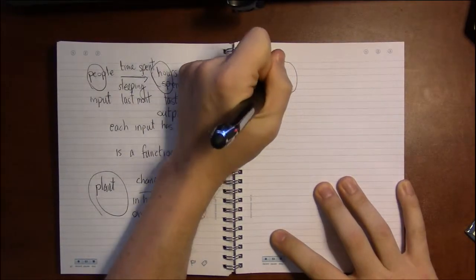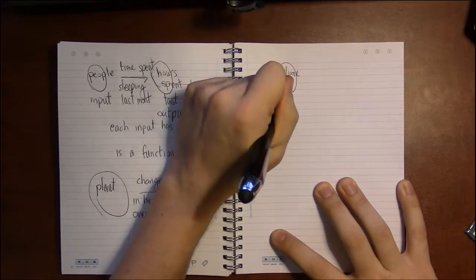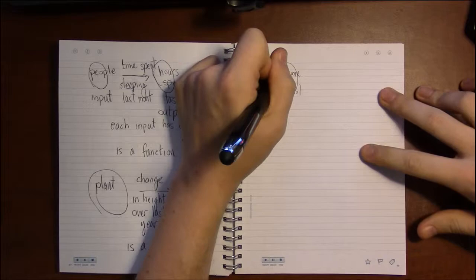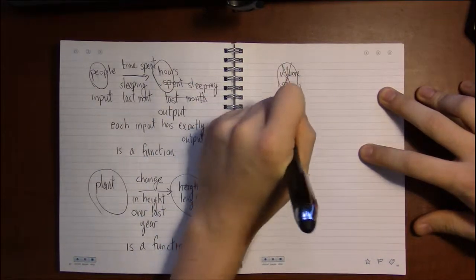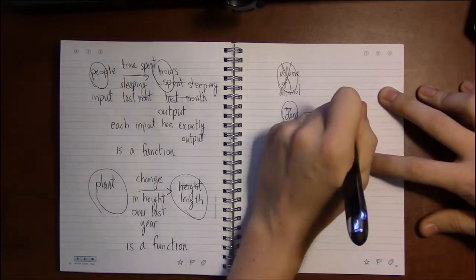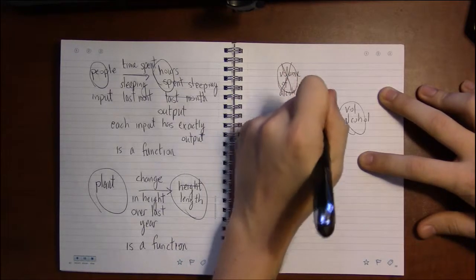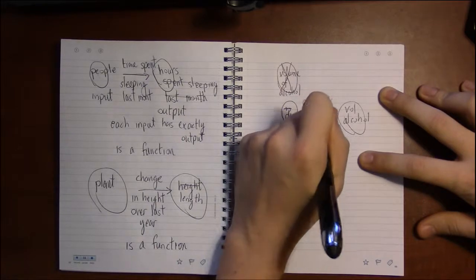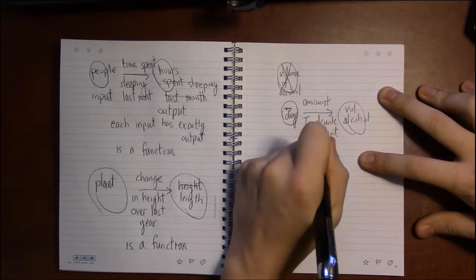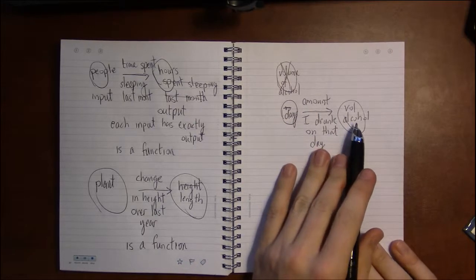One more example. I want days as my inputs and a volume of alcohol as my outputs, and this is the amount I drank on that day. Now notice that, again, each day I either drank that amount of alcohol or I didn't. So this is a function.